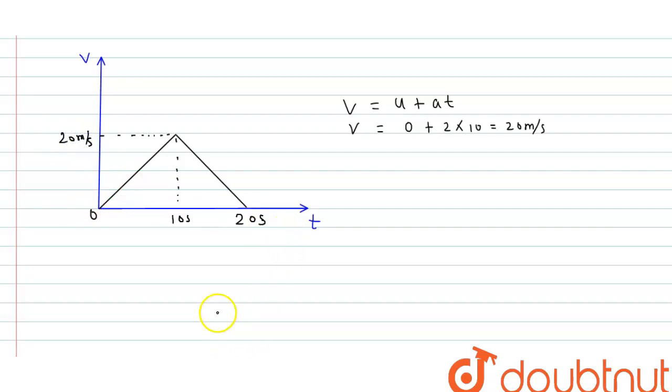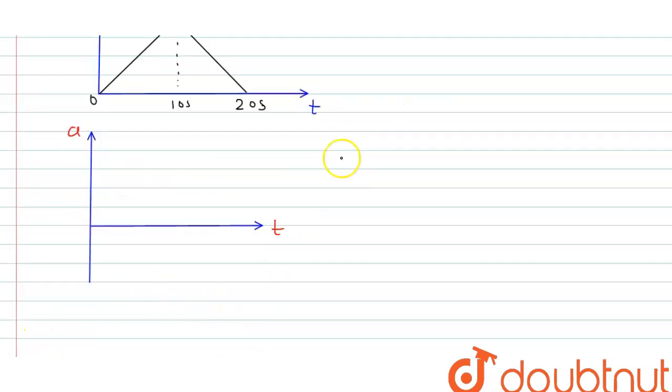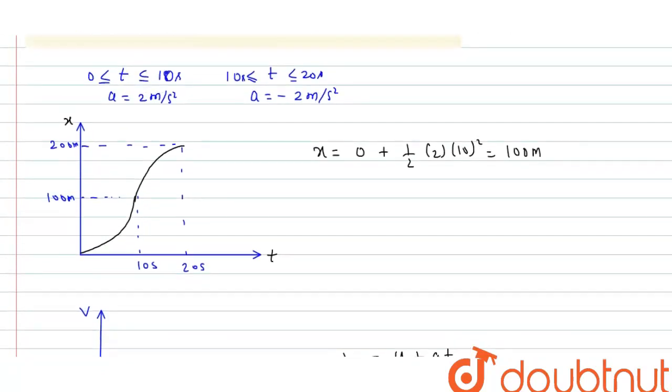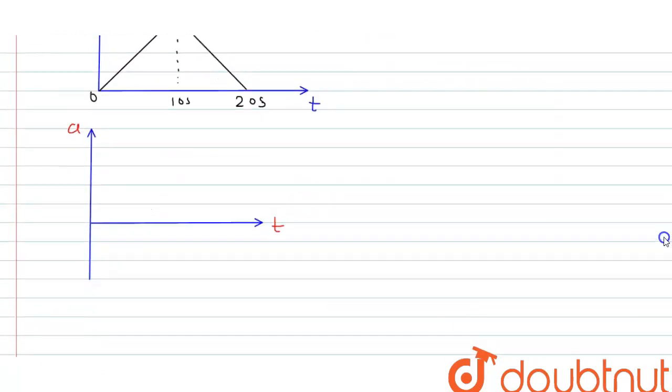This is the velocity versus time graph. Now we have to draw the acceleration versus time graph. Since acceleration of the particle is constant, for 0 to 10 seconds it is plus 2, and for 10 to 20 seconds it is minus 2.